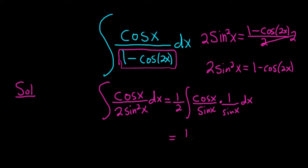This becomes 1 half. Cosine over sine is cotangent of x. And then 1 over sine, well, that's just cosecant, cosecant of x dx.